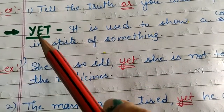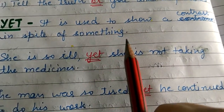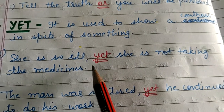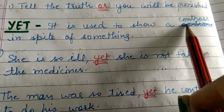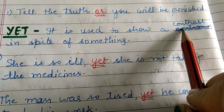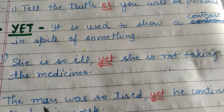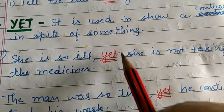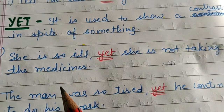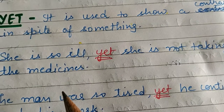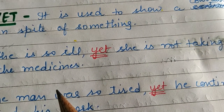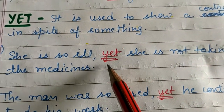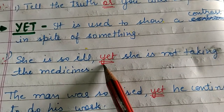Next conjunction is 'yet'. It is used to show a contrast in spite of something. Kisi bhi cheez ke bawajud bhi, agar kisi bhi cheez ke hone ya na hone ke bawajud bhi contrast ya opposition aata hai, toh us situation mein hum 'yet' use karte hain. Example: 'She is so ill, yet she is not taking the medicine.' In spite of being ill, she won't take medicine. Another: 'It is raining heavily outside, yet she went out of the house.' So 'yet' means in spite of something.